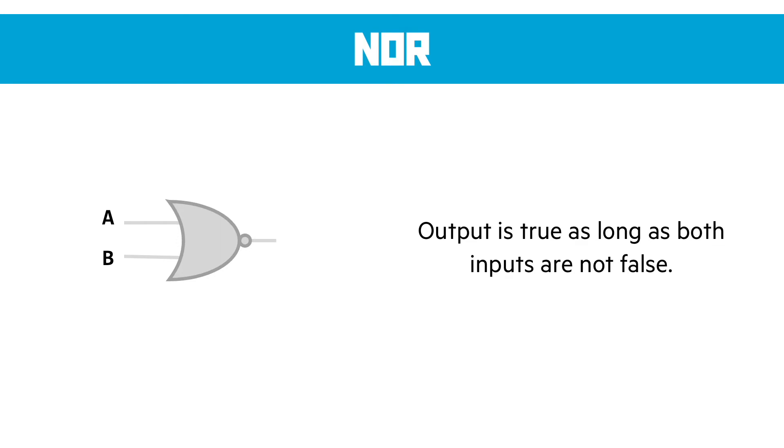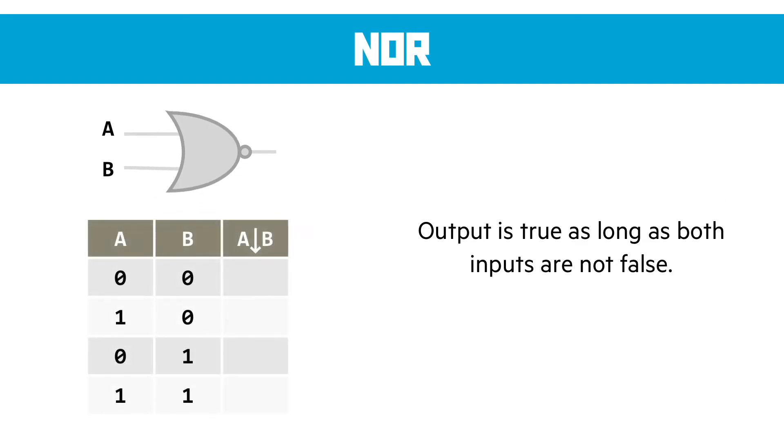So let's take a look at that truth table, and again take a look at the symbol we're using to illustrate a NOR gate. Where both inputs A and B are turned OFF, giving us zero values, we get a positive 1 output. The rest of the table though is just OFF signals. The only time we get an ON or TRUE signal is where both of the inputs are NOT false.